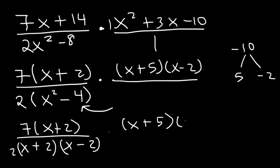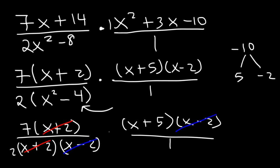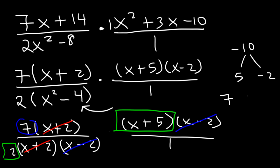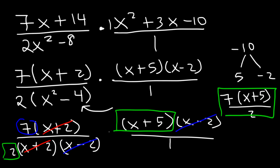Now let's see what we can cancel. We can cancel (x + 2) and we can cancel (x − 2). So we have 7 left over, an (x + 5), and a 2. The final answer is 7 times (x + 5) divided by 2. That's the solution to this problem, fully simplified.